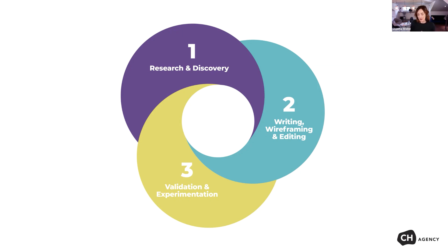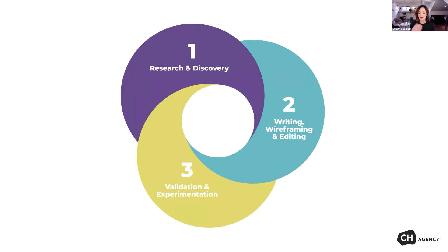Then comes writing, wireframing and editing. That's where you write. If you're writing something that needs to be wired — where the message hierarchy needs to be very clear — then you'll want to wireframe that. Editing is the last thing before you go into validation, where you're really cleaning things up and doing your seven sweeps, really editing in the awesome.